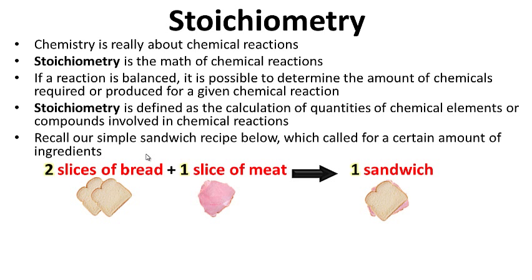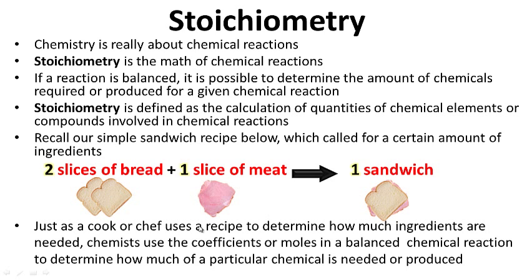Recall our simple sandwich recipe, which called for a certain amount of ingredients — two slices of bread and one slice of meat makes our sandwich. Just as a cook or chef uses a recipe to determine how much ingredients are needed, chemists use the coefficients or moles in a balanced chemical reaction to determine how much of a particular chemical is needed or produced.